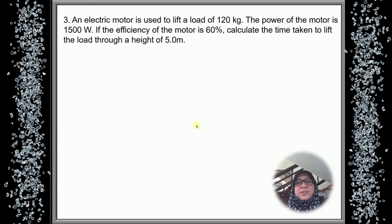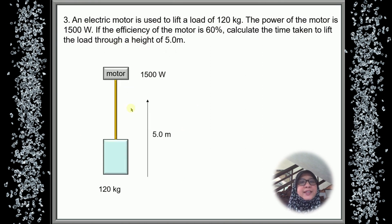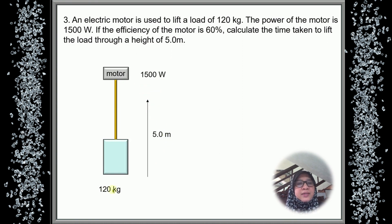Question 3: An electric motor is used to lift a load of 120 kg. The power of the motor is 1,500 watts. If the efficiency of the motor is 60%, calculate the time taken to lift the load through a height of 5 meters. So the power of the motor is 1,500 watts, the travelling distance is 5 meters upward, and the mass is 120 kg.